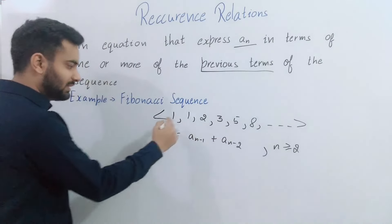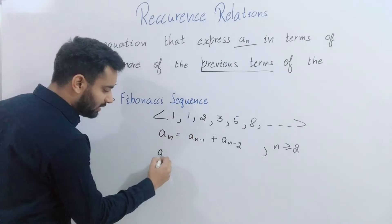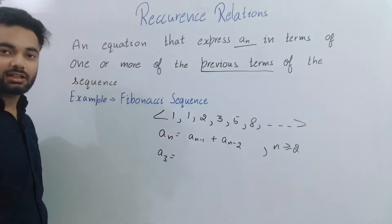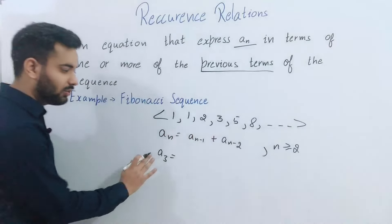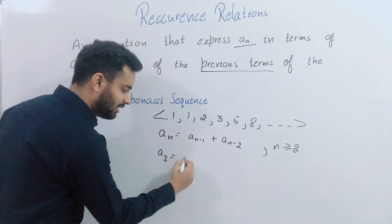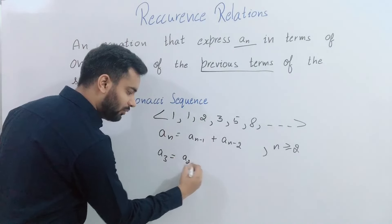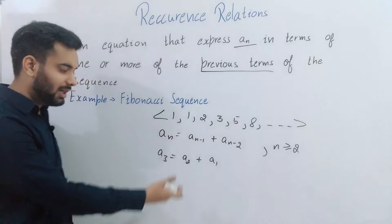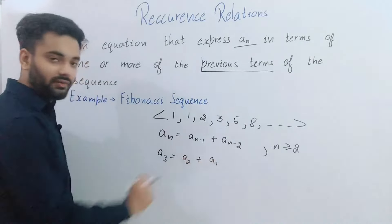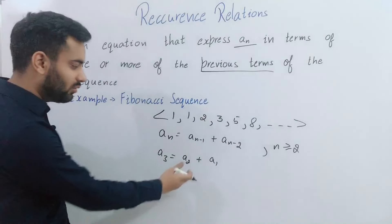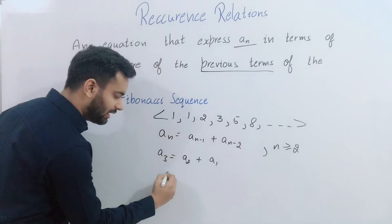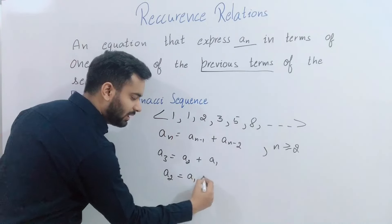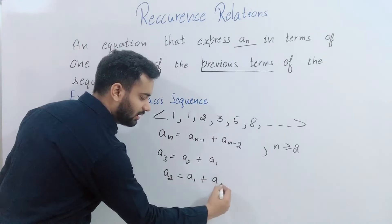We have A(3). We can calculate this — we can represent it as A(2) plus A(1). But we do not have the value of A(2). So we have A(2) expressed as A(1) plus A(0).